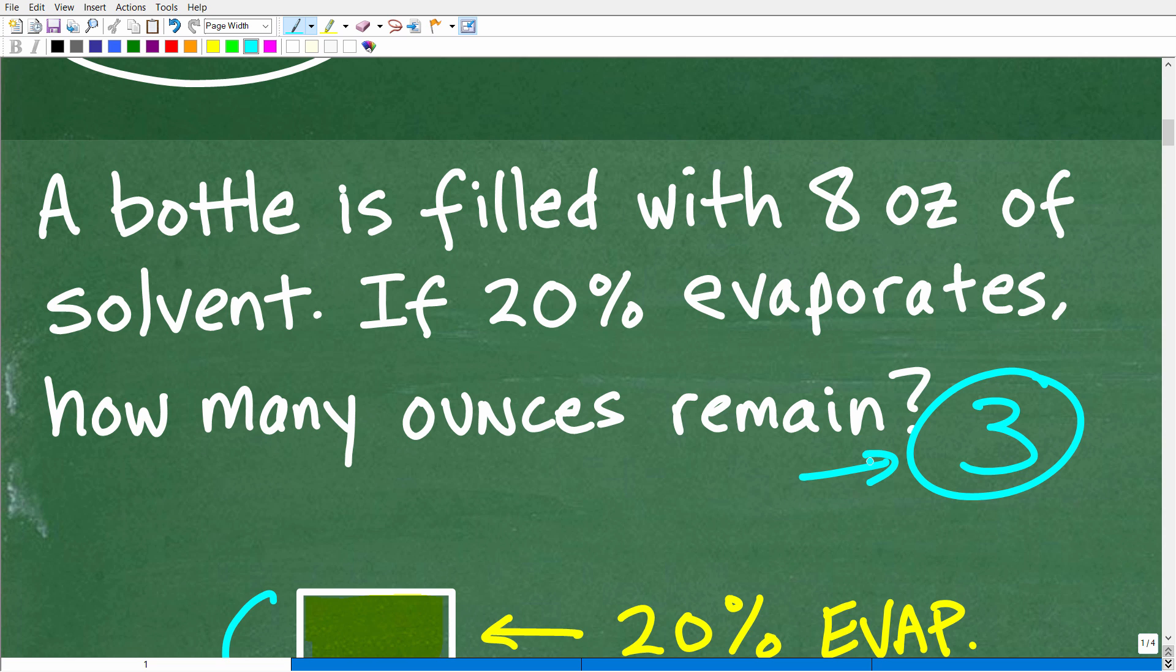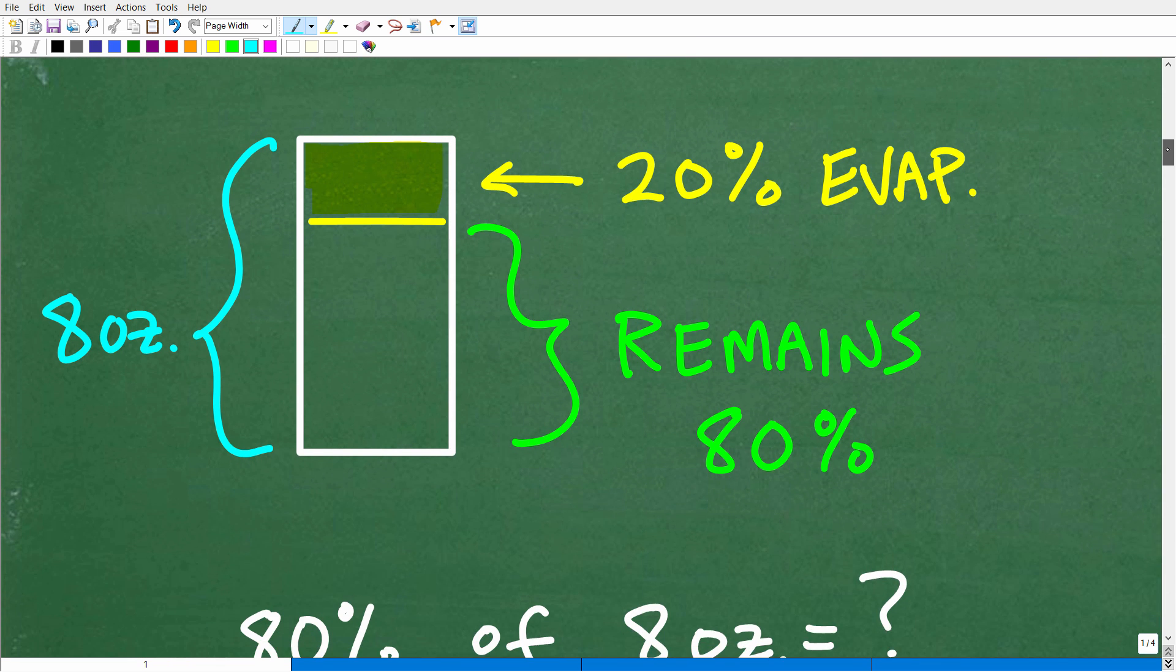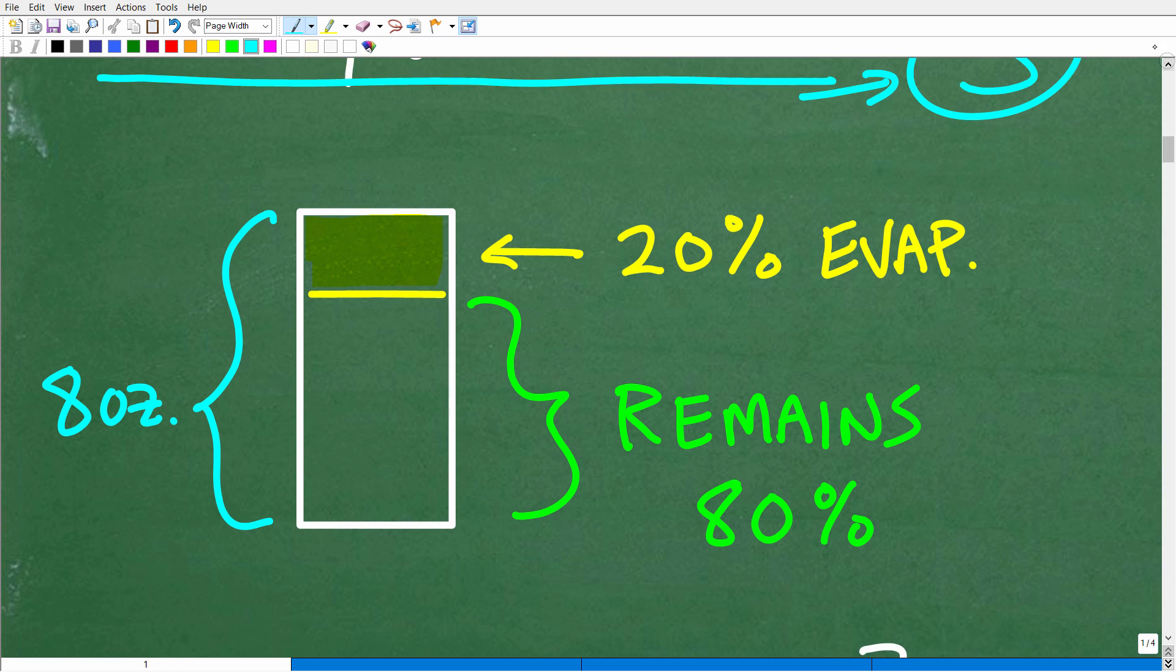So here we have this bottle right of eight ounces of solvent. And if 20 percent evaporates, how much remains after this happens? Okay, well, the best way to solve this problem is to try to model the information. And we can do that pretty easily by coming up with a nice, lovely little sketch here. All right. So now your model can be different. So feel free to be creative, but you've got to understand what's going on with the information of the problem so you can kind of see the solution. That's why a picture is worth a thousand words.